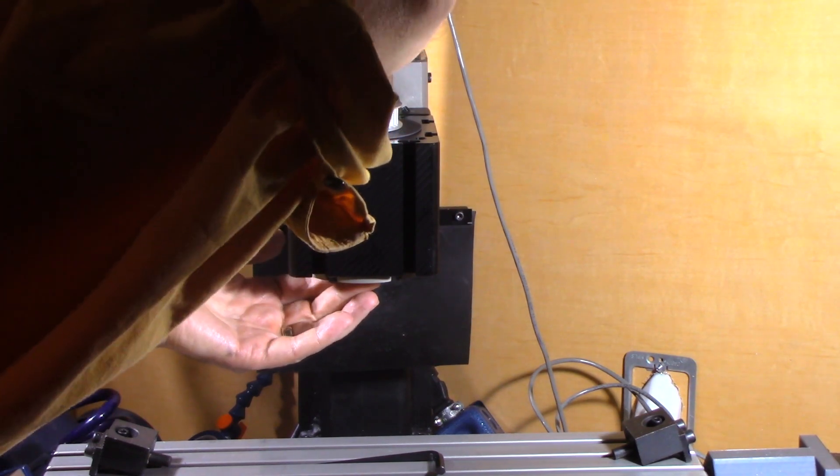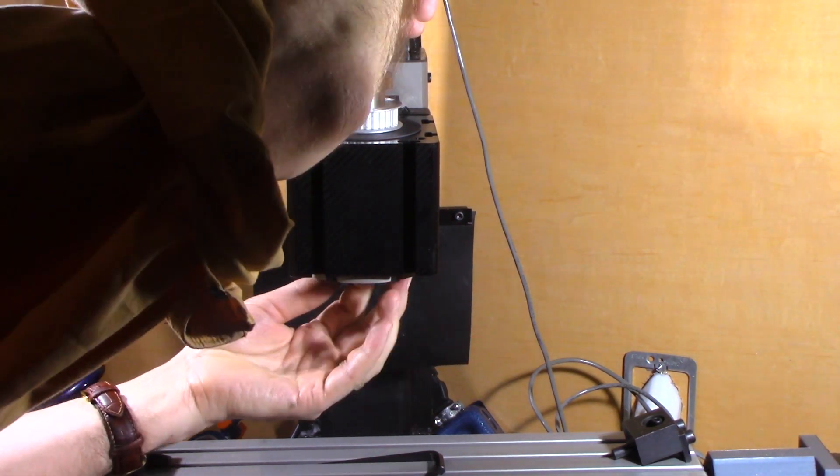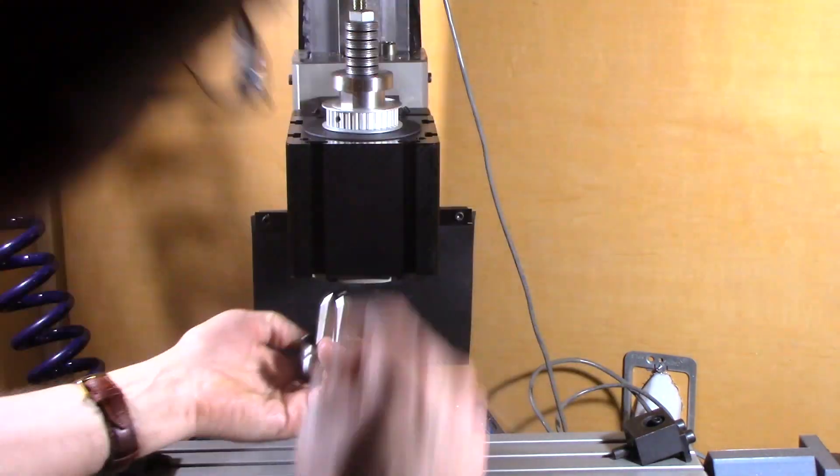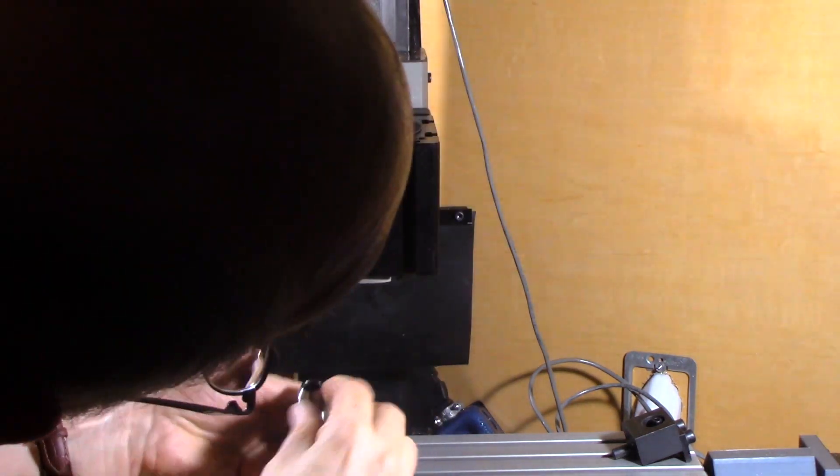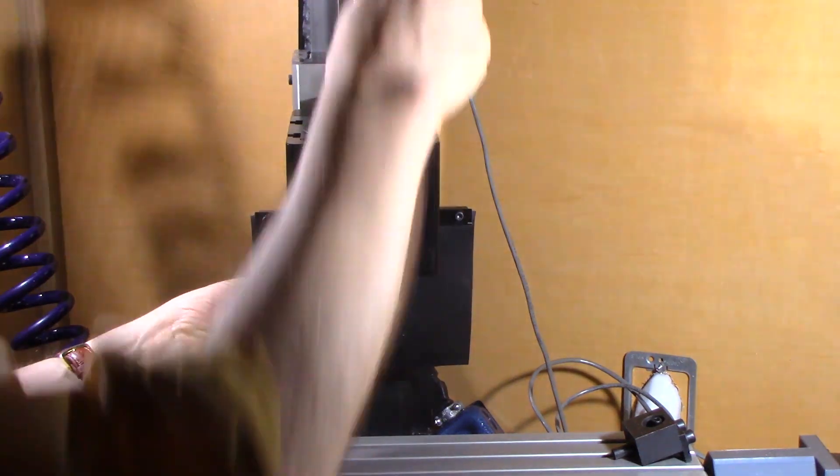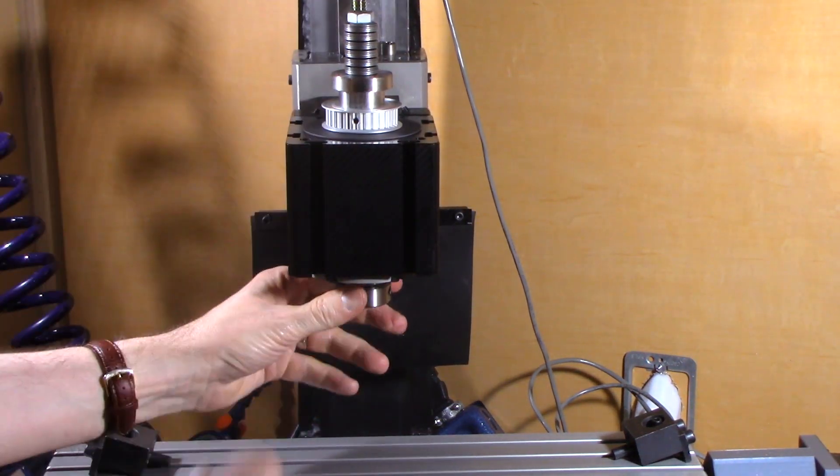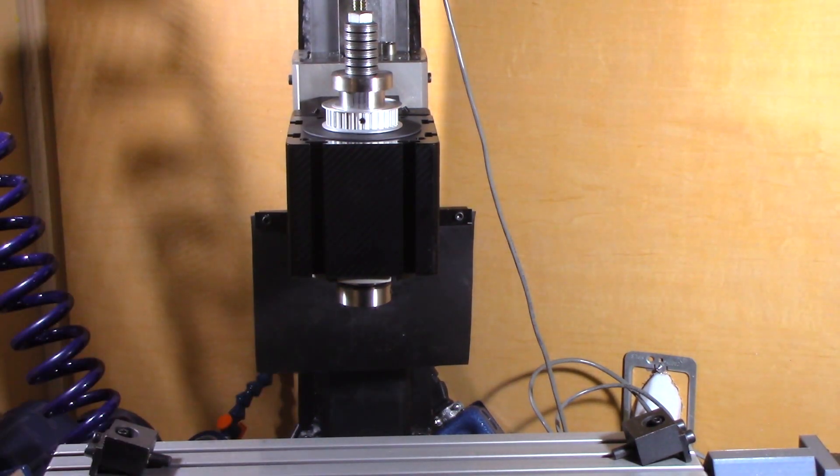And then just screw this in. So first I'll take an R8 and, okay I think I may have tightened it too much. Okay, let's put this in there. Alright, that should be good. Just hand tightened is all I need for the tramming.